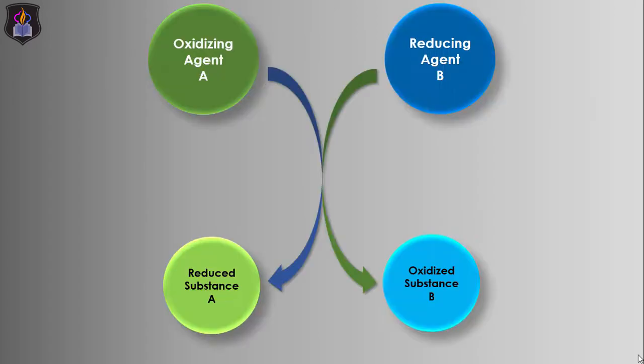In our last tutorial, we learned that an oxidizing agent helps to oxidize another substance while a reducing agent causes another substance to be reduced. So, if you want to learn how to test for these substances in the laboratory, then ensure you watch this video to the end.